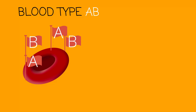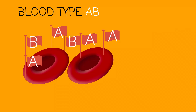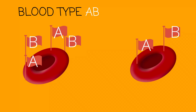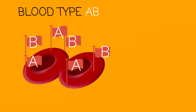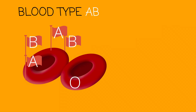Now let's look at blood type AB. Because AB represents both A and B, it has no army to fight against them. So if blood type A comes around, it will accept it. If blood type B comes around, it will accept it. If blood type AB comes around, it will accept it. And if blood type O comes around, it will accept it. AB is known as the universal receiver and will accept all blood types.